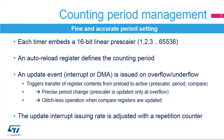Each timer embeds a linear clock pre-scaler, which allows you to divide the clock by any integer between 1 and 65,536, allowing the counting pace to be precisely adjusted. For instance, a division by 80 will yield a precise 1 MHz counting rate when the APB clock is 80 MHz. The auto-reload register defines the counting period. In down-counting mode, the counter is reloaded with the period value when it underflows. In up-counting mode, the counter rolls over and is reset when it exceeds the auto-reload value.